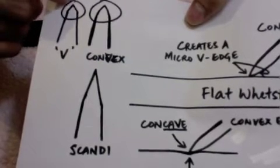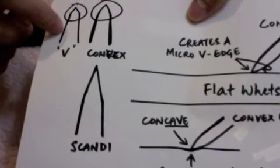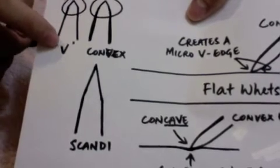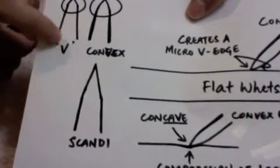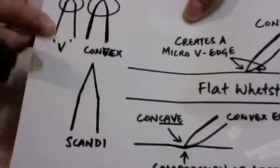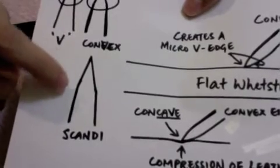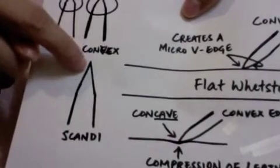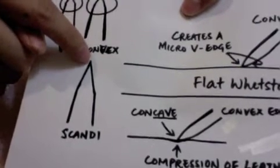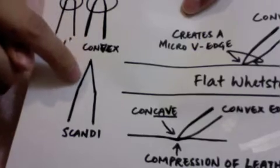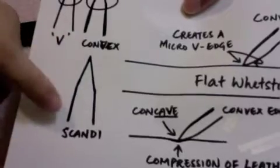As for this, the standard V-edge, there is a small bevel, micro bevel here, followed by the secondary edge, and then I did not draw, but there is the primary bevel over here. But the Scandi has the primary over here, primary bevel, and then secondary bevel, and that's it. That means the micro bevel, the micro V-edge is included together with the secondary bevel. So this is a Scandi-Grind.